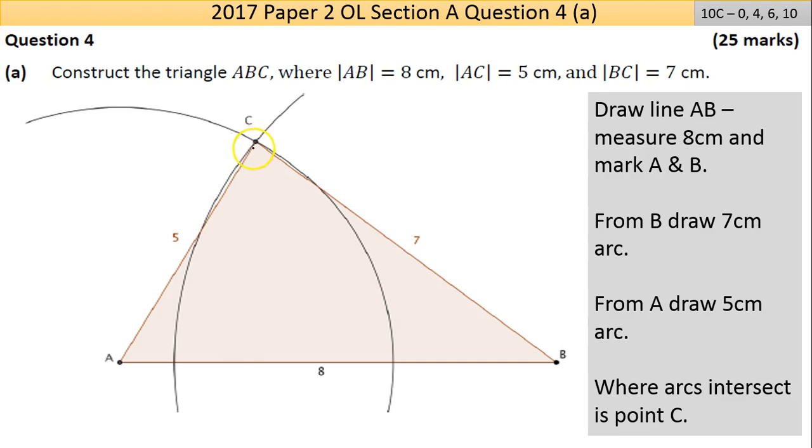You could cheat by measuring with two rulers, but why would you do that if you know the concept? Draw the arc, finishes that off. Let's move on.